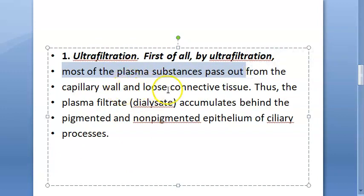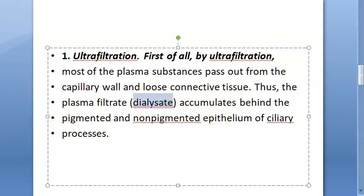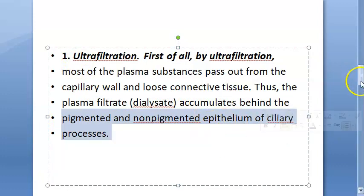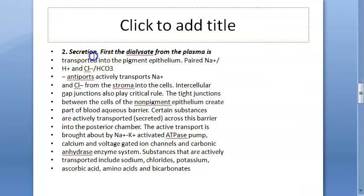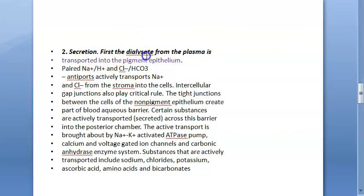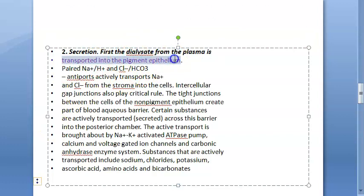Most of the plasma substances pass out of the capillary wall and loose connective tissue to form a dialysate. This dialysate accumulates behind the pigmented and non-pigmented epithelium of the ciliary process. Here you can see the non-pigmented and pigmented epithelium — the dialysate will come and accumulate there. That is ultrafiltration.